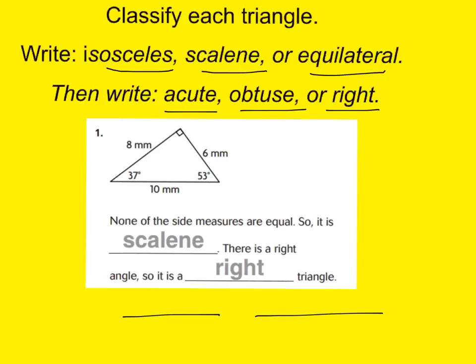Take a look at this example for number one. As you can see, the type of sides shows that it's a scalene because there are three different lengths. And if you look at the type of angle it has, I see one right angle right here, so it is automatically called a right triangle. We would call this a right scalene triangle.